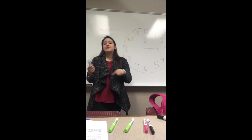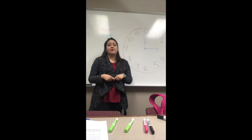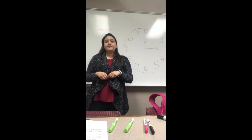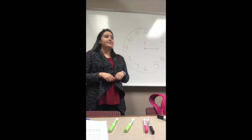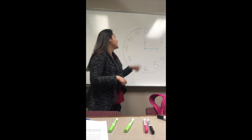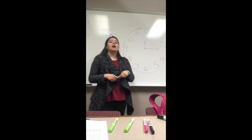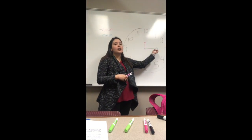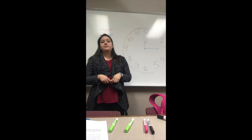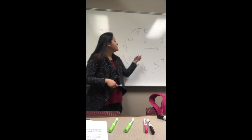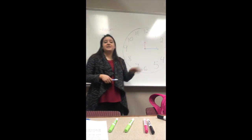Now why do we have a hand that's longer than the other one? Because one of them tells us the minutes and the other one tells us the hour of the clock. The little hand tells us the hour of the clock. Now if the smaller hand shows us the hour, what does the long hand teach us? It shows us the minutes that we see on a clock.